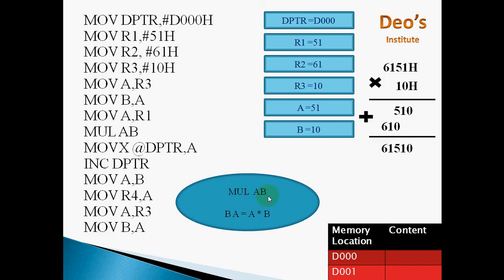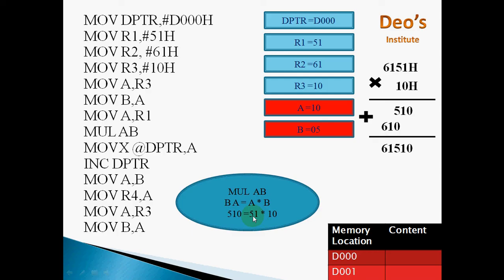When we execute MUL AB, it multiplies the contents of accumulator A by the contents of register B. The contents of A are 8-bit and the contents of B are 8-bit, so 8-bit multiplied by 8-bit gives a 16-bit result. To store that 16-bit result, two registers are used: the lower byte of the result is stored in A and the higher byte is stored in B.